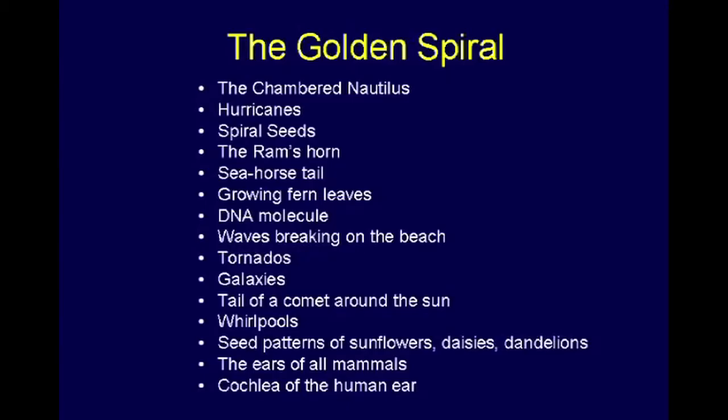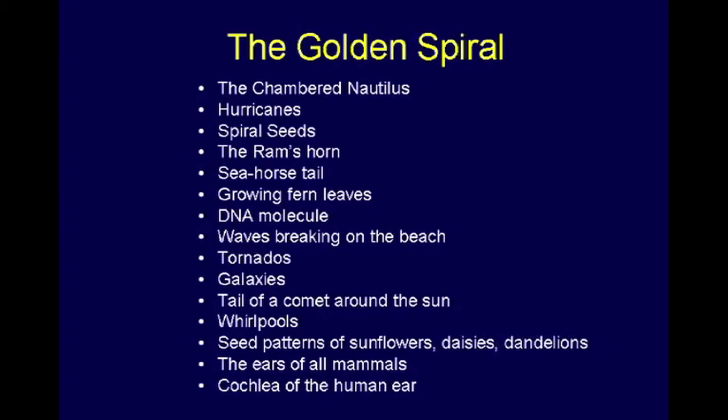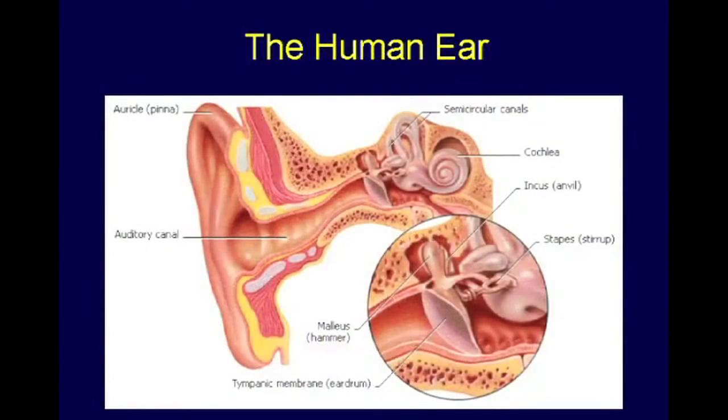You find that in the hurricane, spiral seeds, the ram's horn, the tail of a seahorse, fern leaves, the DNA molecule, you'll find it in waves breaking on a beach, tornadoes, galaxies, the tail of a comet around the sun, whirlpools, seed patterns of sunflowers, daisies, and dandelions, the ears of all mammals, and especially the cochlea of the human ear. You have one in your ear that helps convert the sound vibrations into pulses that the ear can transmit to the brain. We'll talk a little bit more about that as we go.